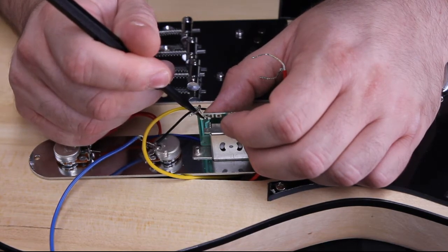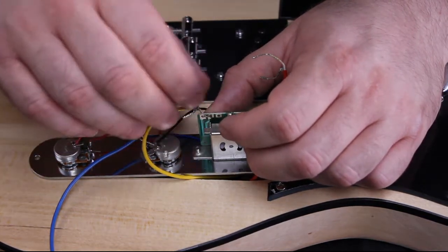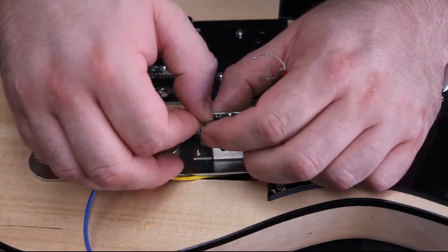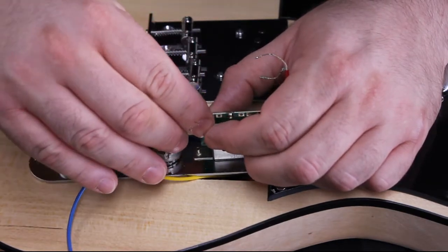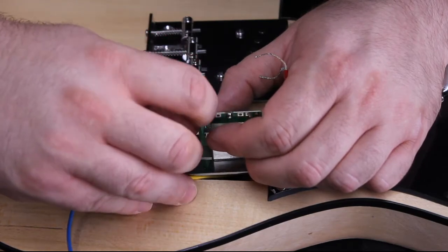Now take the ground wire and we're going to install it into the small hole on the side of the three-way switch housing and solder it in place.